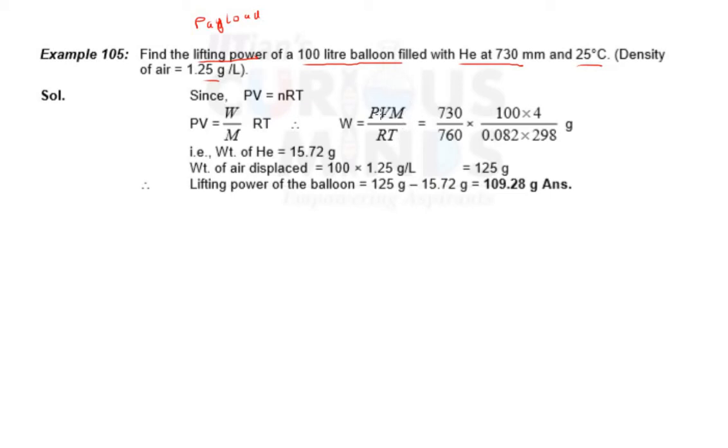Now you can solve. Pressure should be in atm, so how to convert to atm? 730 mm Hg, so 730 upon 760, you know, because one atm is equivalent to 760 mm of Hg. So 730 mm should be 730 upon 760 atm.